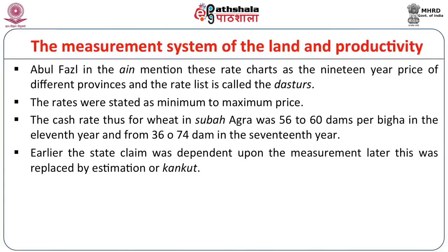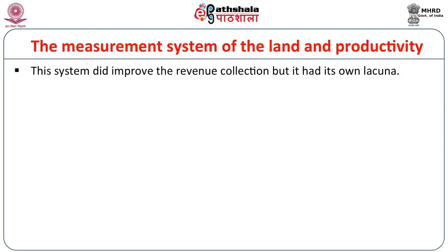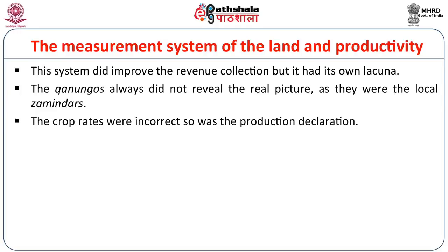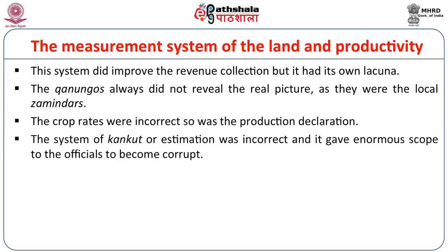Earlier, the state's claim was dependent upon measurement; later this was replaced by what is known as Kan Kut, or the estimation of production. This system did improve revenue collection but it had its lacunae. The Kanungos did not always reveal the real picture and were also controlled by the local zamindars, who would not give the exact revenue picture to the state. The crop rates were incorrect, as was the production declaration. The system of Kan Kut or estimation was therefore incorrect and gave enormous scope to officials to become corrupt.